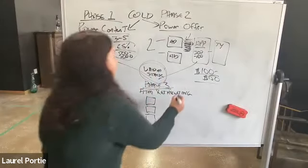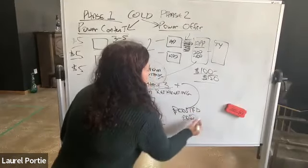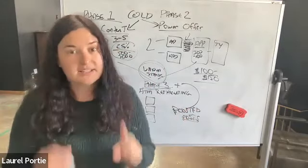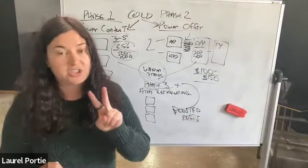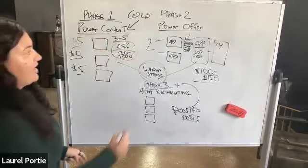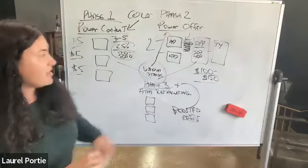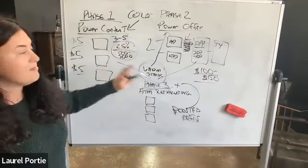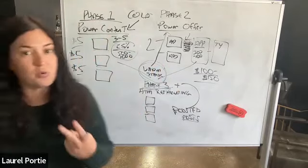So our warm stack is going to go to phase three, which is the ATM retargeting strategy and boosted posts. Okay. Now that's variation one. Variation two is still for people who have not consistently hit 15K a month. The only difference between variation one and variation two is that we're only going to run cold traffic to power content and we're going to run our warm stack to our power offer. So that's the only variation in two. A lot of my students like the second variation because they can put most of their budget here. That's going to warm them up before sending people to the power offer.